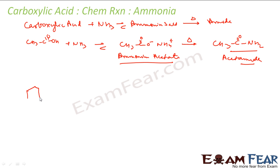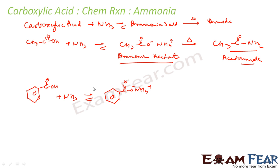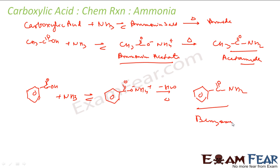Similarly, benzoic acid reacts with ammonia to form ammonium benzoate — an ionic compound where one hydrogen goes from COOH to NH3 giving COO- NH4+. When you heat this, water goes off and it forms benzamide. So ammonium benzoate on heating gives benzamide.